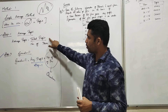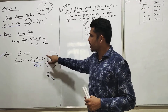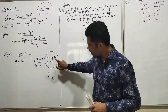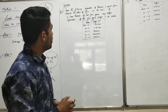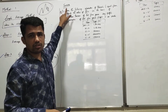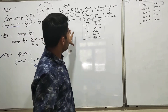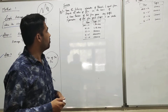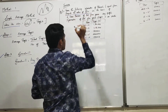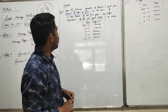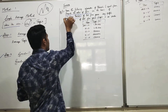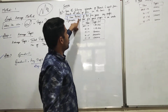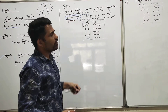We are now starting with the exercise — Question Number Four. In case you are not having the textbook, the question has been specified on the guidebook. From the following information of Bavish and Vipul's firm, compute the value of goodwill on the basis of four years purchase. The number of years of purchase is four.